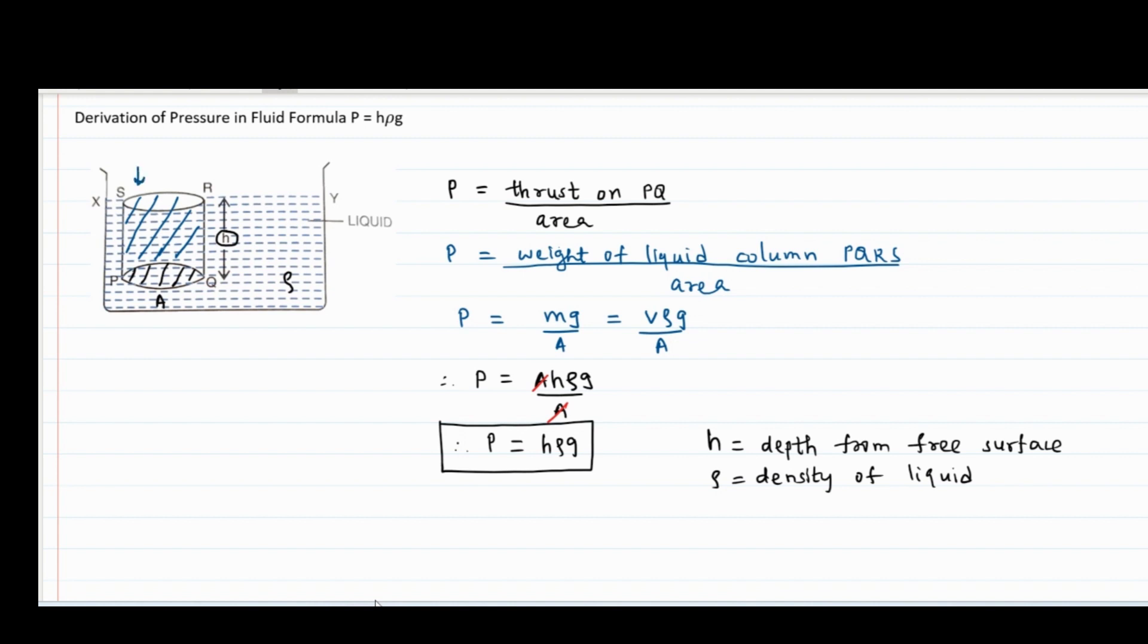Since there is atmospheric pressure also acting on the free surface of the liquid, to find the total pressure at any depth inside the liquid, atmospheric pressure also must be taken into consideration. We can say that the total pressure at any point inside the liquid becomes pressure due to liquid plus atmospheric pressure. So the formula of pressure becomes H rho g plus P A, where P A stands for atmospheric pressure.